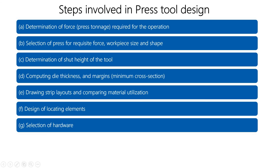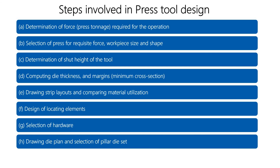The seventh step is selection of hardware, which covers selection of standard parts. The eighth step is drawing the die plane and selection of the pillar die set. Here we draw the die plane — the plane in which the operations have to be performed — because until we select a plane we cannot decide the bending operations. The pillar and die set selection must be perpendicular to the die plane.